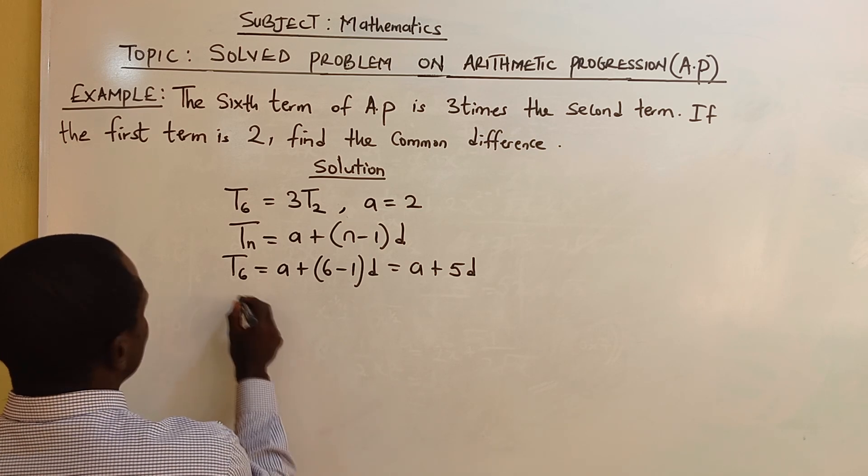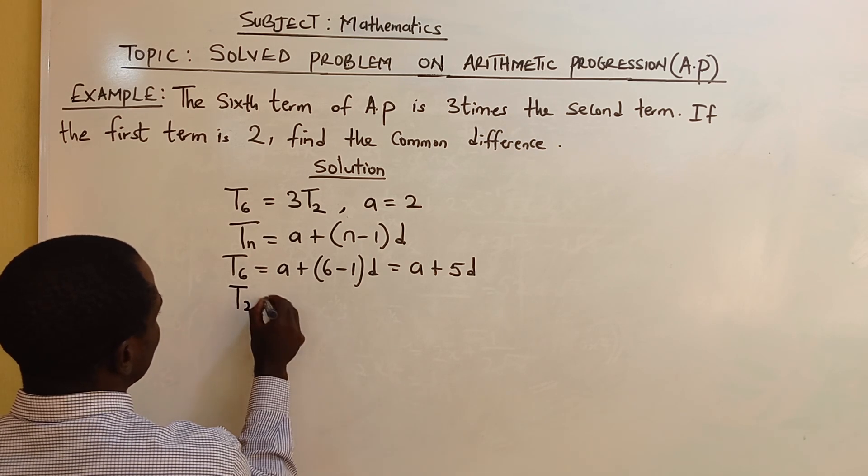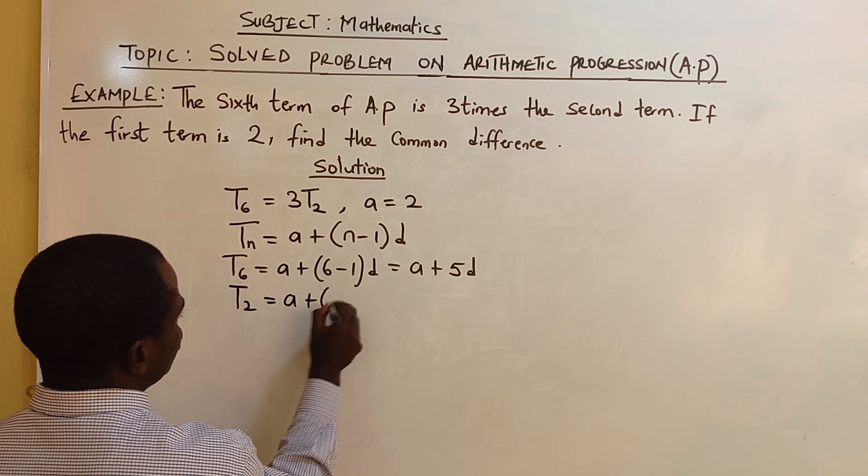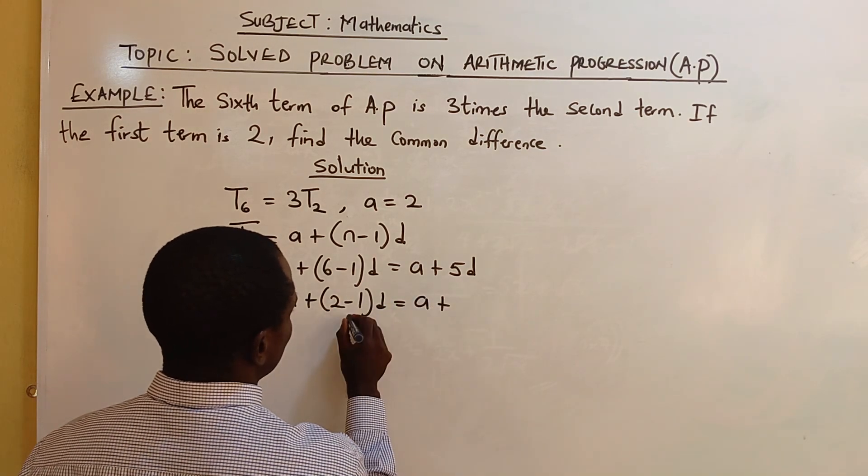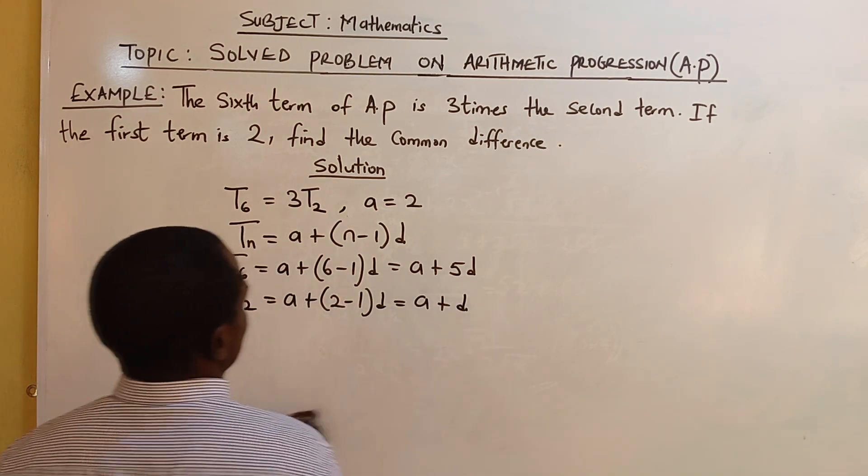Okay, now we have T2 also, which is A plus 2 minus 1 D, because A plus 2 minus 1 is 1, 1 times D is D.